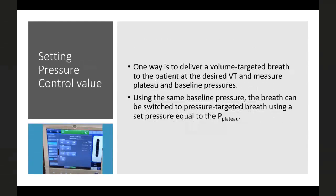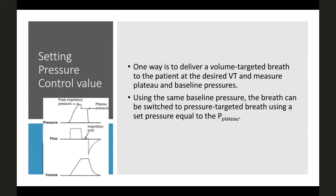For setting the pressure control value, one approach is to deliver a volume-targeted breath, measure the plateau pressure as a baseline, then switch to pressure-targeted ventilation using that plateau pressure as the set pressure. In a volume-targeted breath, peak pressure is the highest pressure attained; with an inspiratory hold, it equilibrates to the plateau pressure, which becomes the pressure control value.